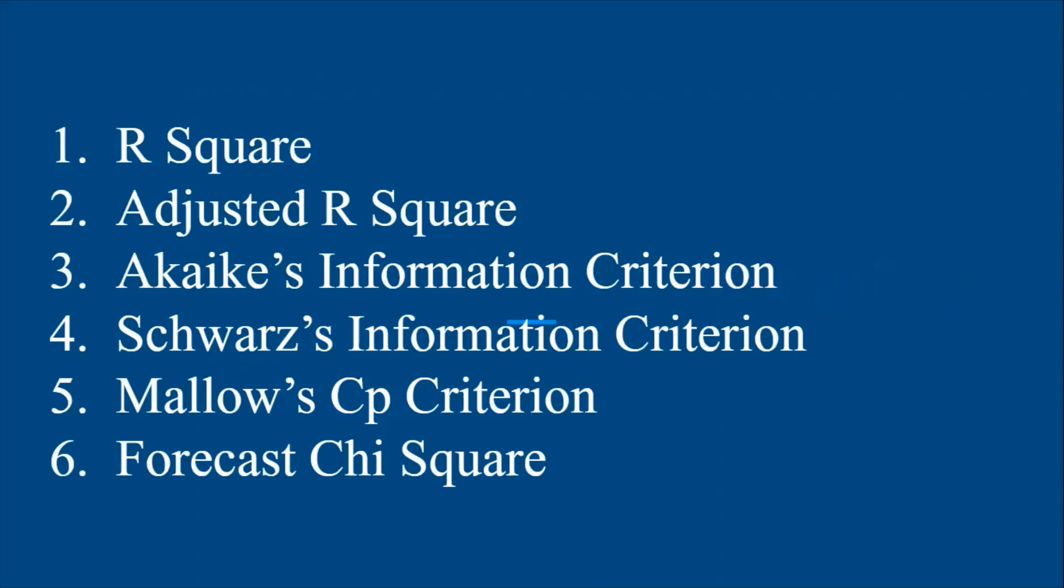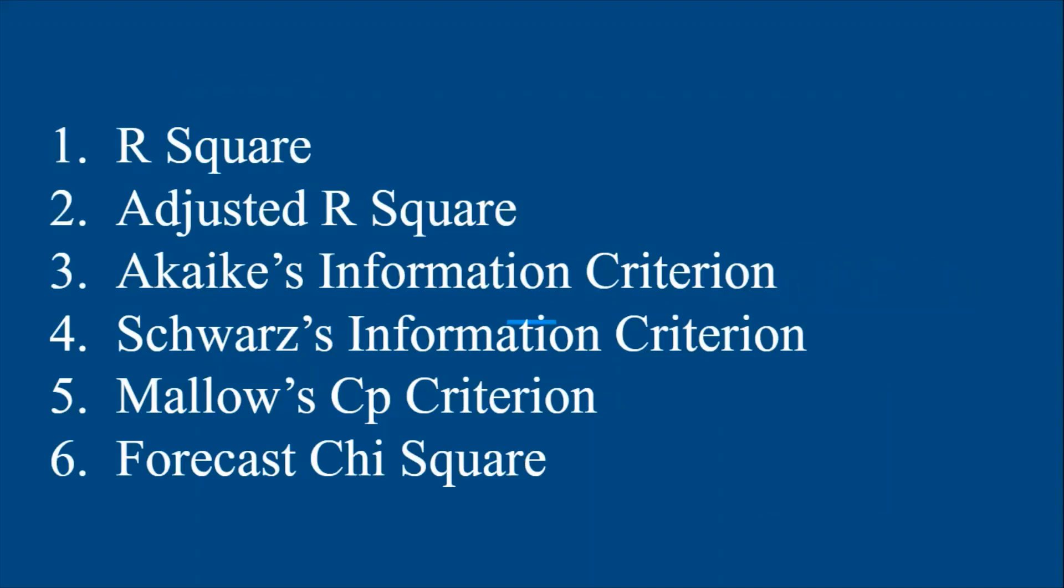The criteria that I'm going to explain are R-square, adjusted R-square, Akaike's information criteria, Schwarz's information criteria, Mallow's CP criteria, and the forecast chi-square. All these criteria aim at minimizing the residual sum of squares or increasing the R-square value.